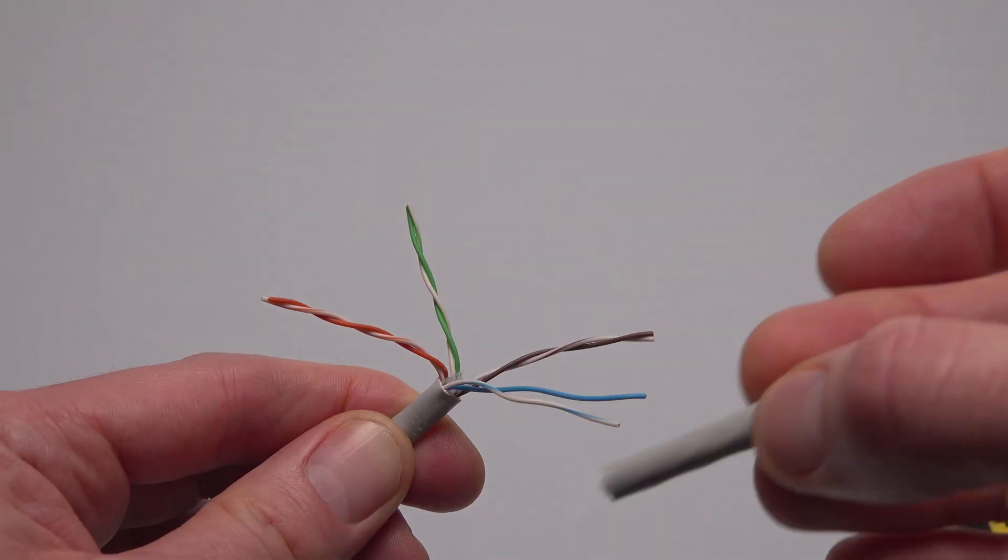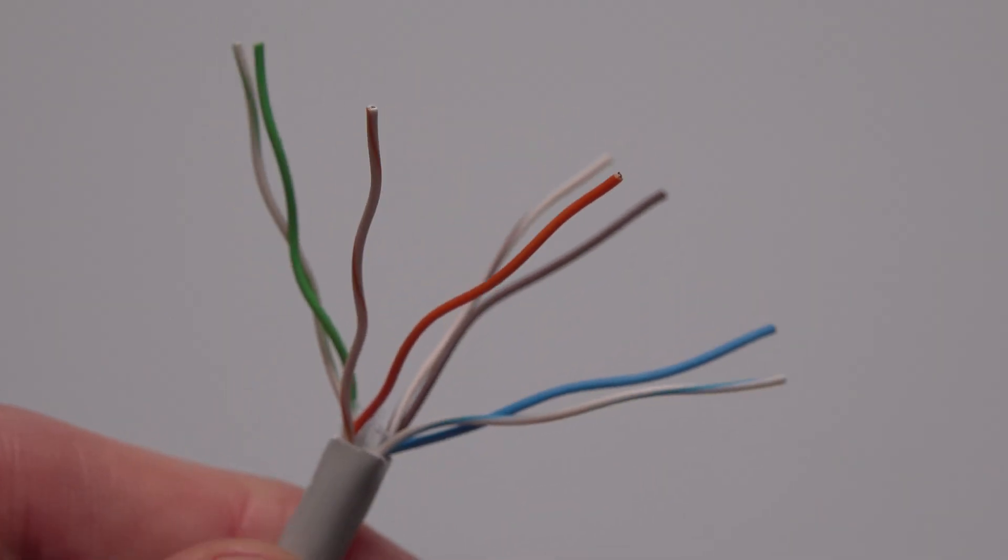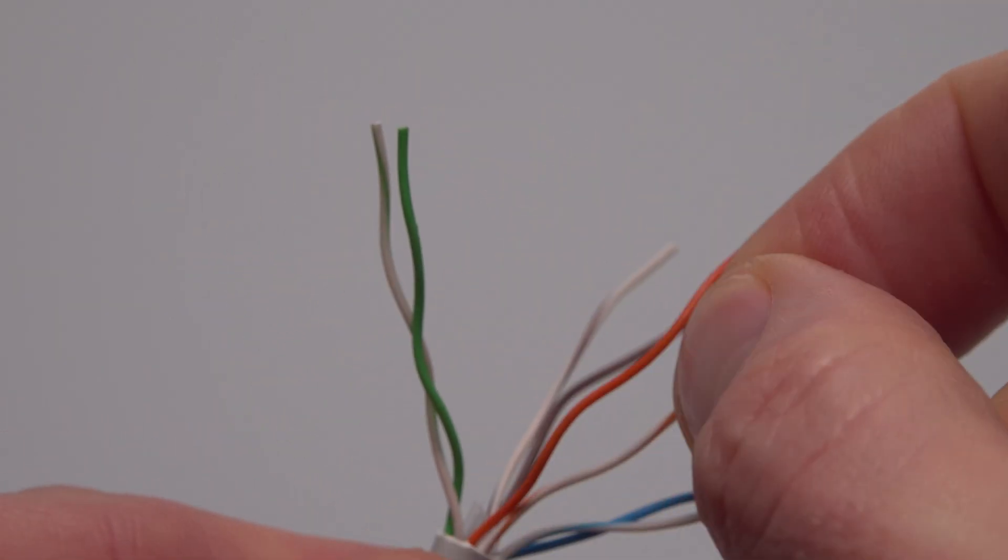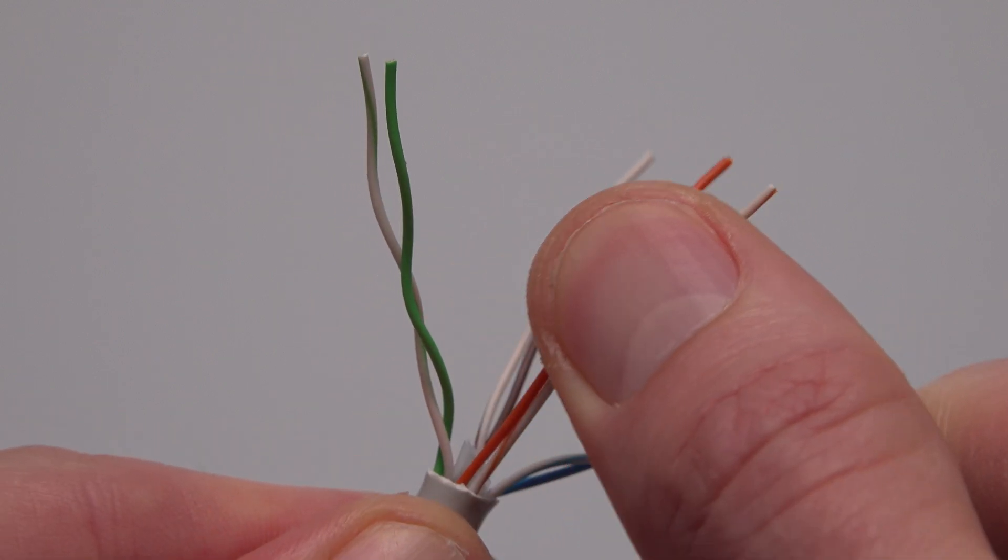Then untwist all four pairs of wires. The outer jacket that you just stripped off can be useful to help with that. Straighten out all eight wires by pinching them tightly together between your thumb and the back of a pair of pliers or a screwdriver then running them along like this.